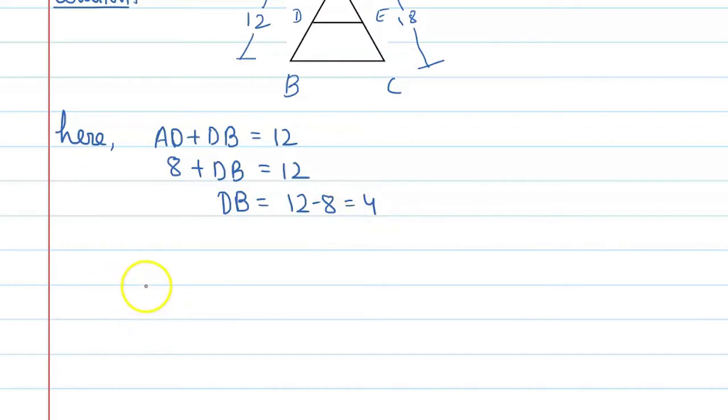Alright. Similarly, if we take a look at the other side, we can say that AE plus EC is equal to AC. So, this is 12 plus EC is equal to 18. So, EC is equal to 18 minus 12, that is 6.